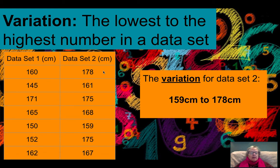we can see that the lowest number in data set 2 is 159 and the largest number is 178. So we will write the variation like that, 159 centimeters to 178 centimeters. Now you can replace this word to with a dash if you'd like, but it's still, regardless,